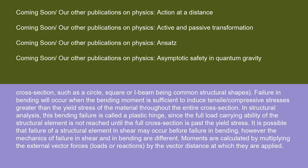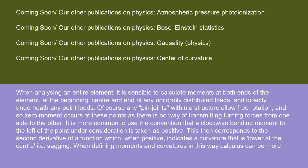Moments are calculated by multiplying the external vector forces, loads, or reactions by the vector distance at which they are applied. When analyzing an entire element, it is sensible to calculate moments at both ends of the element, at the beginning, center, and end of any uniformly distributed loads, and directly underneath any point loads. Of course, any pin joints within a structure allow free rotation, and so zero moment occurs at these points as there is no way of transmitting turning forces from one side to the other.